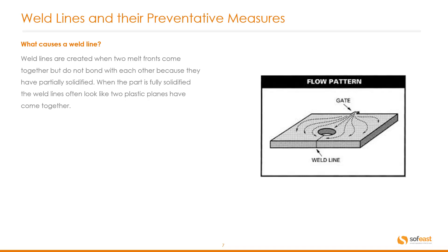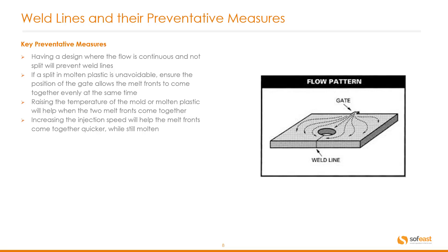Weld lines. An example on the right hand side here shows what a weld line looks like. Weld lines are created when two melt fronts come together but do not bond with each other because they have partially solidified. When the part is fully solidified, the weld lines often look like two plastic planes have come together. Key preventative measures: have a design where the flow is continuous and not split. If a split in molten plastic is unavoidable, ensure the position of the gate allows the melt fronts to come together evenly at the same time. Raising the temperature of the mold or molten plastic will help when the two melt fronts come together. Increasing the injection speed will help the melt fronts come together quicker while still molten.